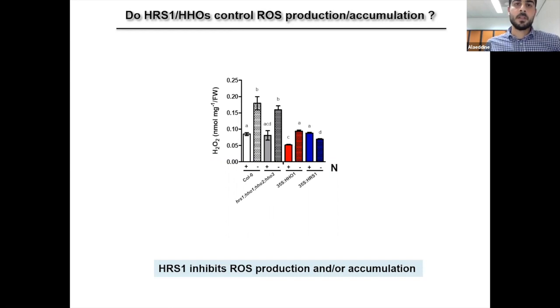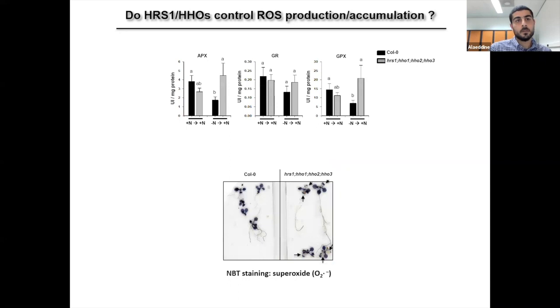And that's why we measured the level of H2O2 in roots. And as expected, the wild type has more H2O2 at minus N, while the overexpression lines are affected in this accumulation, which strengthens our hypothesis that HRS1 inhibits ROS production and/or accumulation. And as discussed before, the mutant phenotype at minus N is not so strong because of the low expression level of HHO transcription factors at minus N.